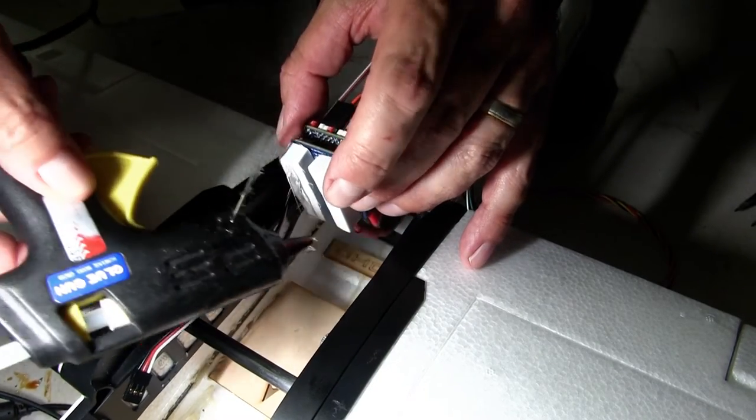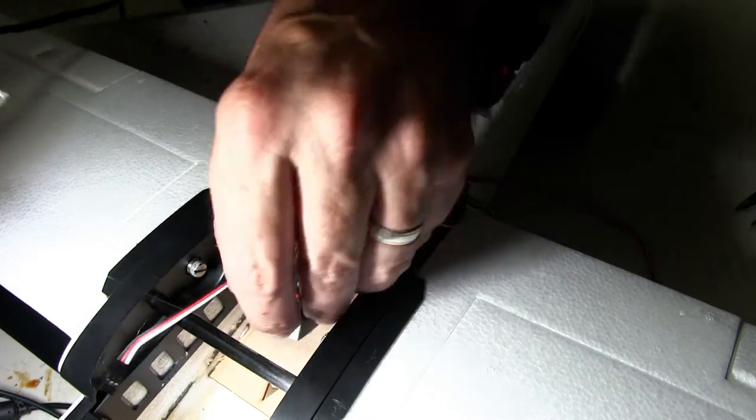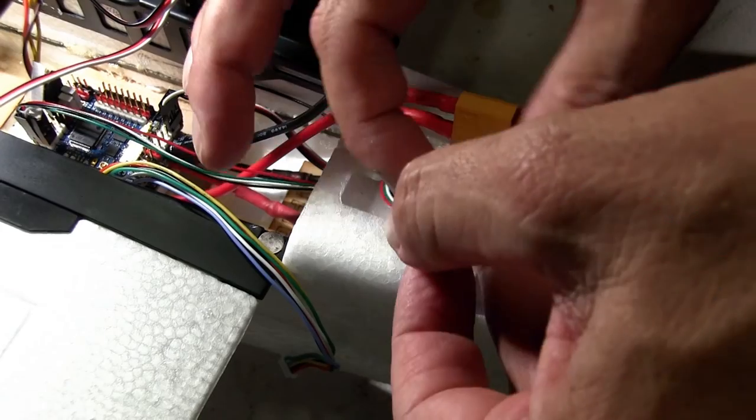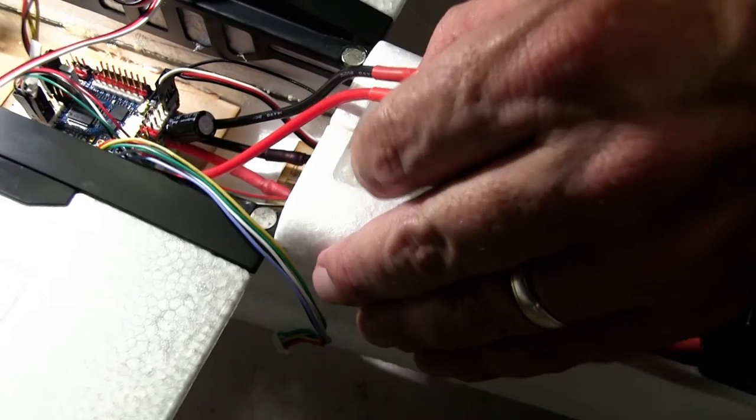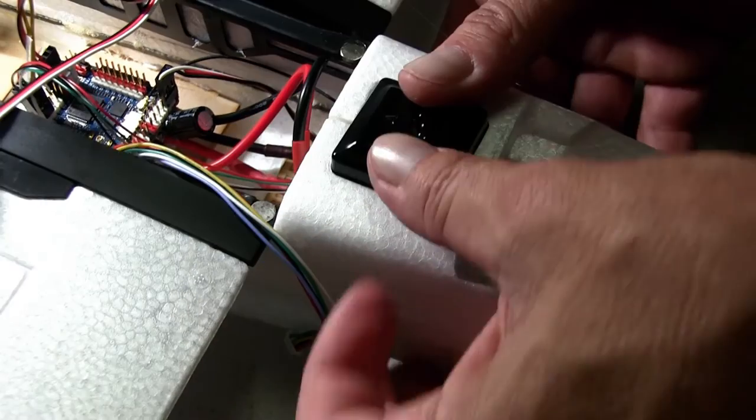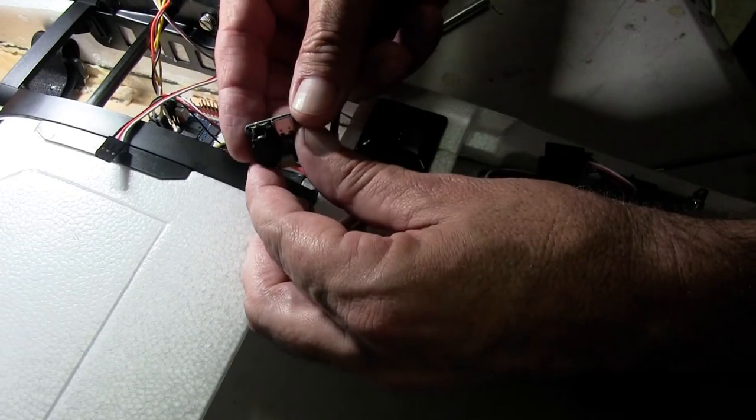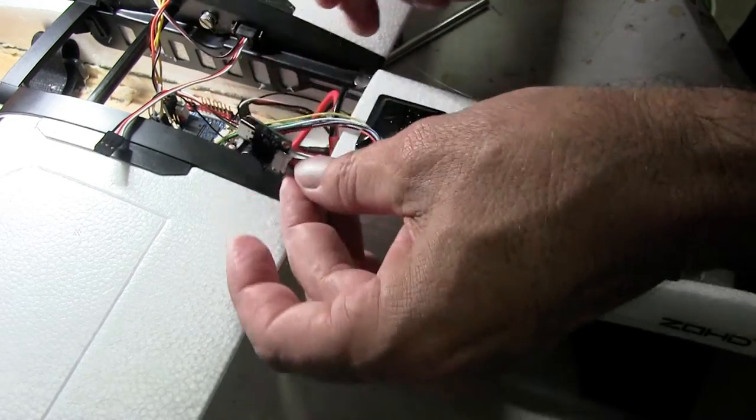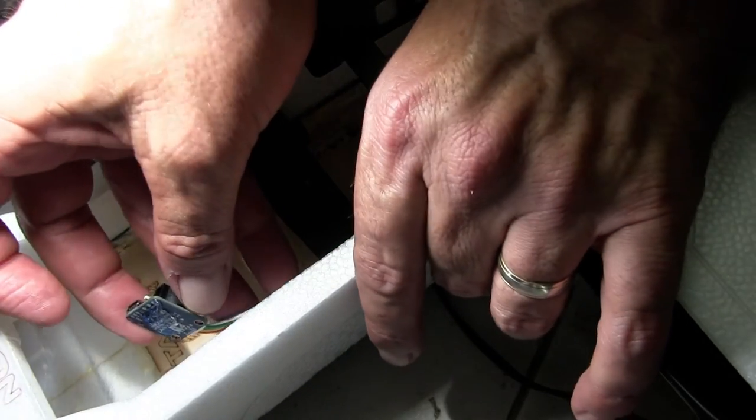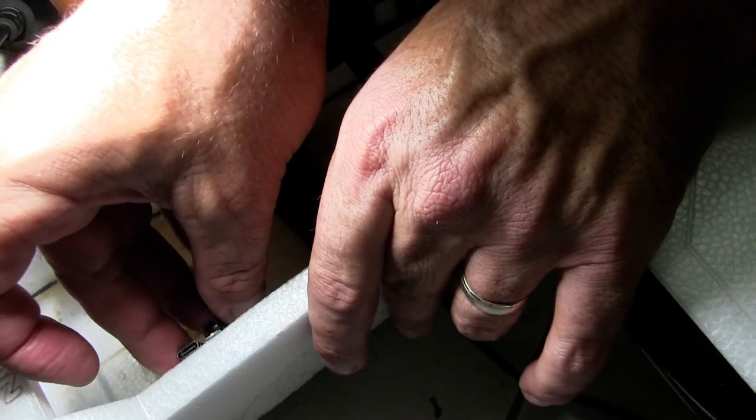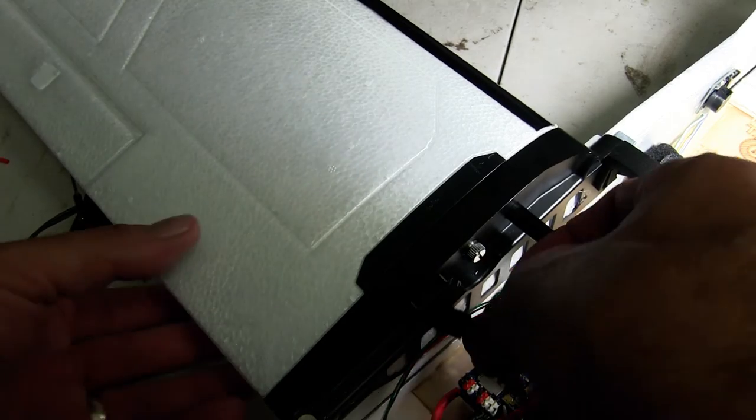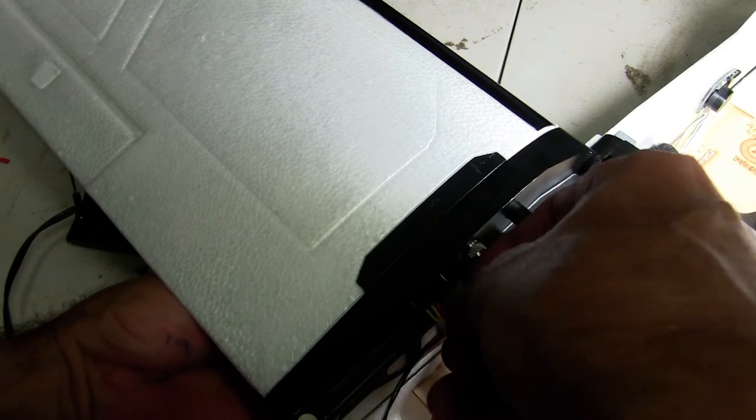We hot glue the flight controller down. And then we hook up the GPS and we also mount that as well in its compartment. We then hot glue the USB port and buzzer. I do that to the front of the fuse. I like to use hot glue. Debatable but I like to use hot glue because I can easily remove things if I make a mistake just by heating it back up again.